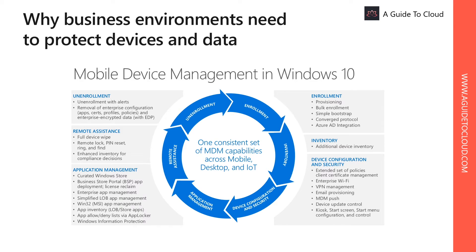MDM functionality includes app distribution, data management, device configuration, and more. MDM authorities such as Intune provide capabilities like device enrollment — MDM can manage only supported devices that are enrolled. A device can include MDM client functionality, such as Windows 10, or for other operating systems such as Android or iOS, you must install a Company Portal app to manage it. For device configuration, you can use profiles and policies to configure devices, control access, and set device settings to comply with company policy.